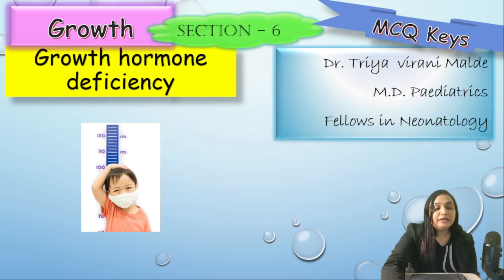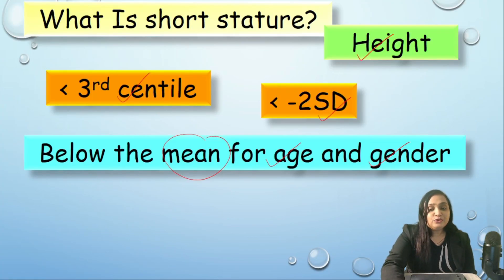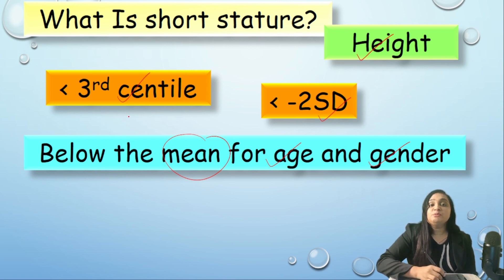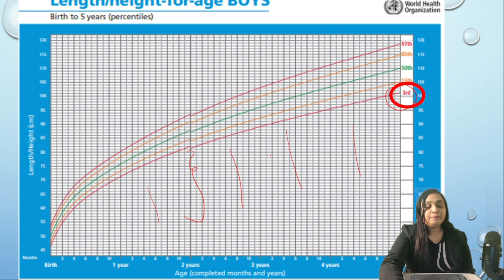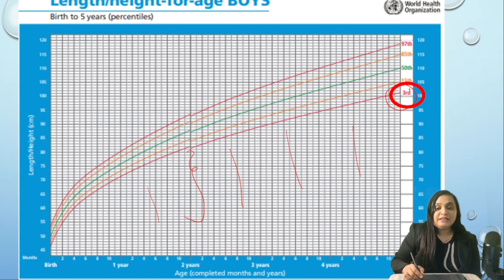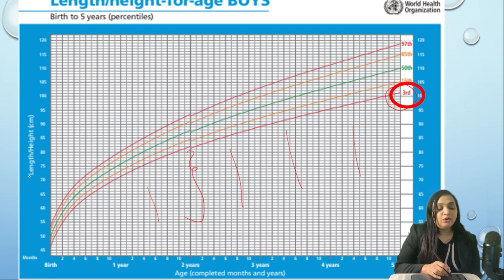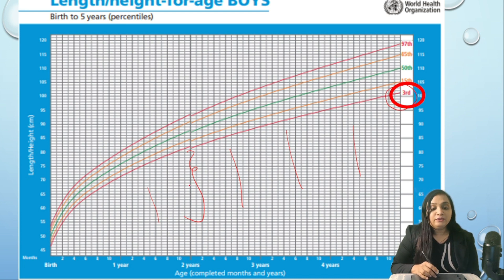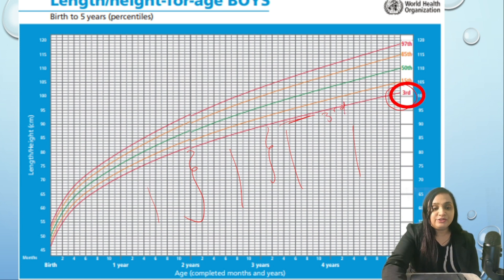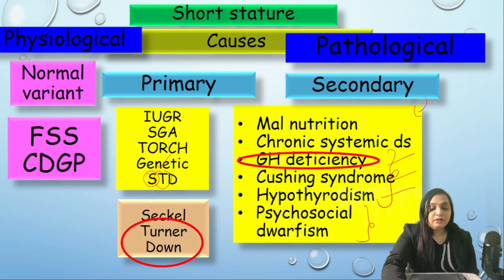Before starting growth hormone deficiency, we should know what short stature is. Short stature is when the height of the child is below the third centile, or minus two standard deviations below the mean for age and gender. In this chart, age is on the x-axis and length in centimeters on the y-axis. If the height of the child is below the red line — the third centile — we call that child short stature.